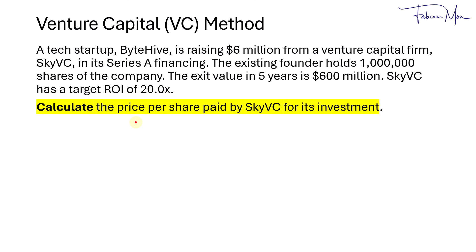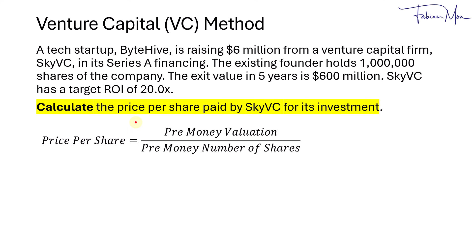Calculate the price per share paid by SkyVC for its investment. To get the price per share, we'll take the pre-money valuation divided by the pre-money number of shares. Before the investment of $6 million, ByteHive would be worth $24 million. Before SkyVC came into the picture, the existing founder holds 1 million shares, so $24 million for 1 million shares equals $24 per share — that would be the price per share paid by SkyVC.